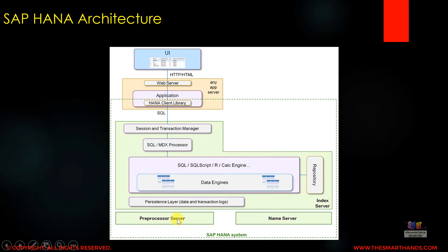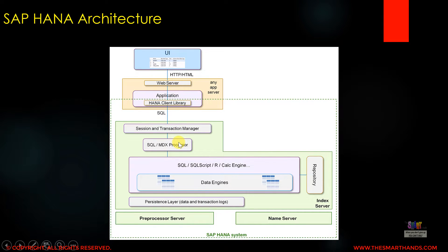Here you can see at the bottom we have the pre-processor server and the name server. On top of that we have the index server, then above that we have the web server, and at the top we have the UI — the web browser used for Fiori apps. The UI browser communicates to the web server, which communicates to the index server, which further communicates to the processor server and name server. That's the architecture in brief about HANA.